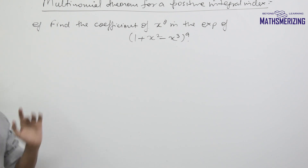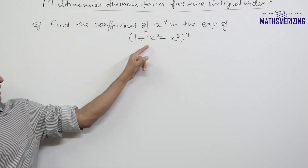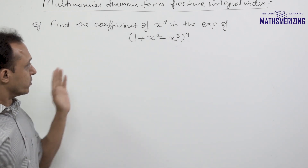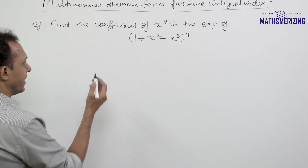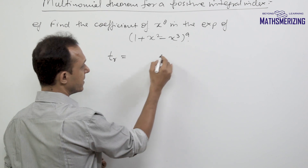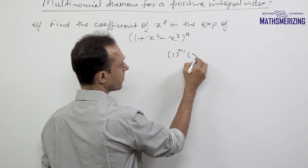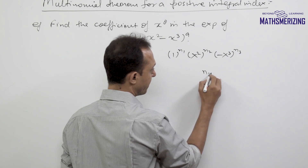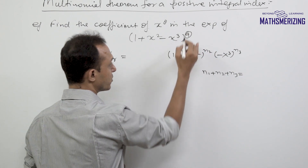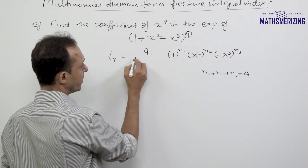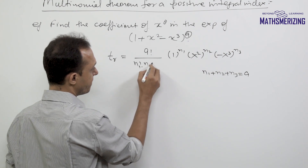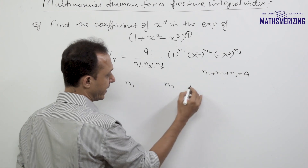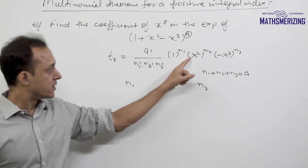Find the coefficient of x⁸ in the expansion of 1 plus x squared minus x cubed to the power 9. We'll solve this using multinomial theorem by writing the general term as 1 to the power n1, x² to the power n2, and minus x³ to the power n3, where n1 plus n2 plus n3 equals 9. The coefficient is factorial 9 upon factorial n1, factorial n2, and factorial n3. We need to find all combinations of n1, n2, n3 that yield x to the power 8.